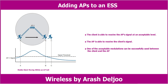In this video, I am going to talk about adding access points to an extended service set or ESS. If a client is associated with an AP, it can maintain the association as long as it stays within the range of the AP.